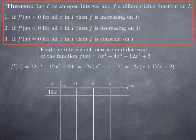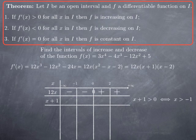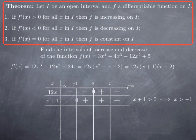Looking at the sign of each factor: 12x is positive when x > 0, so I put a positive sign in the columns corresponding to x in (0, 2) and (2, ∞). It is 0 when x = 0, and negative when x < 0, so I put a negative sign to the left of 0. For x + 1: it is positive when x > −1, so I put positive signs to the right of −1. It is 0 at x = −1, and negative when x < −1.